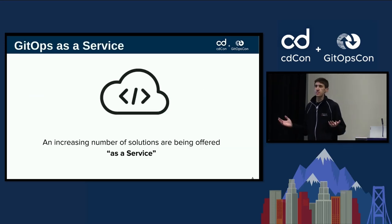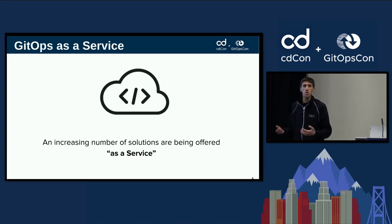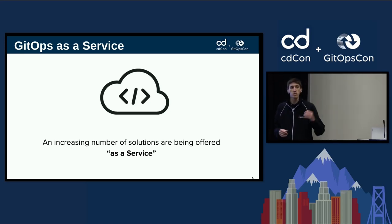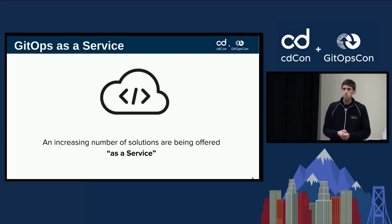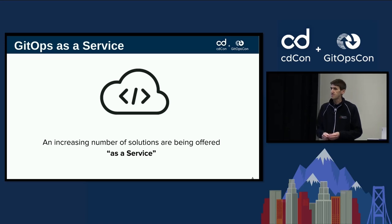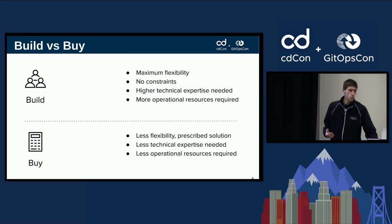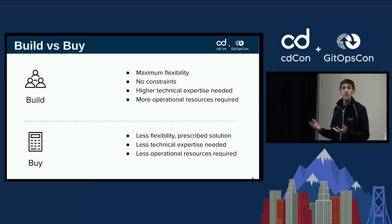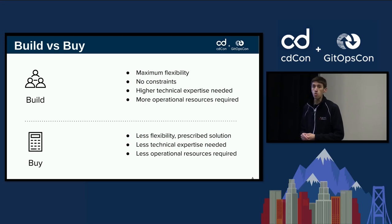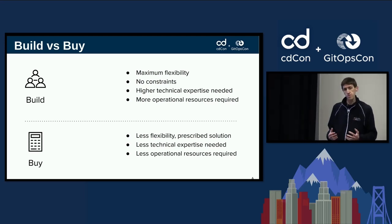GitOps as a Service — everything these days is being offered as a service. You go to AWS, Azure, Google — everything is a service: databases, you name it. Now GitOps can also be run as a service. The question is, do you want to or do you not want to? It comes down to: do you want to buy a managed service or build one yourself?